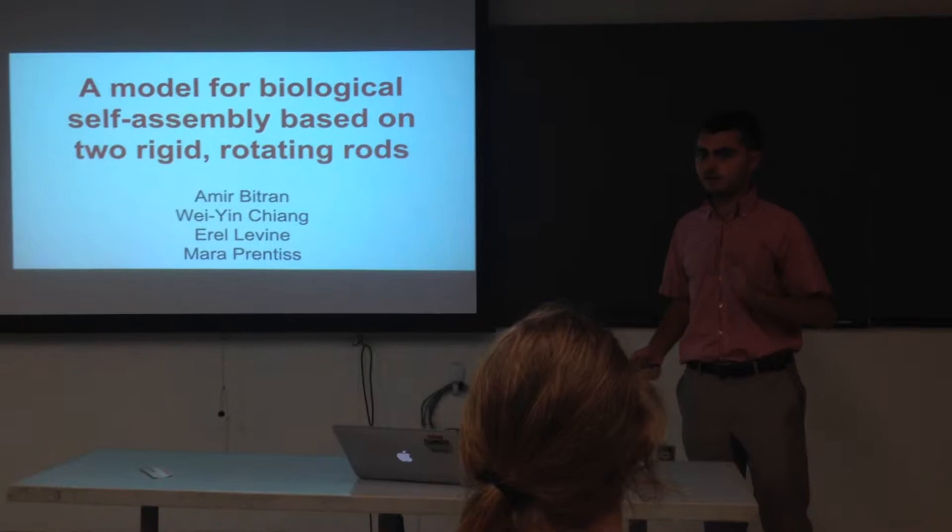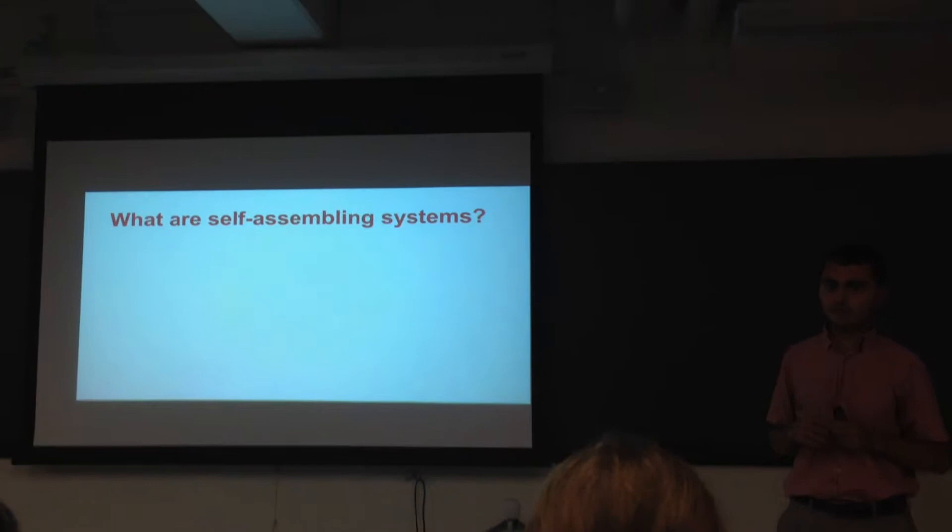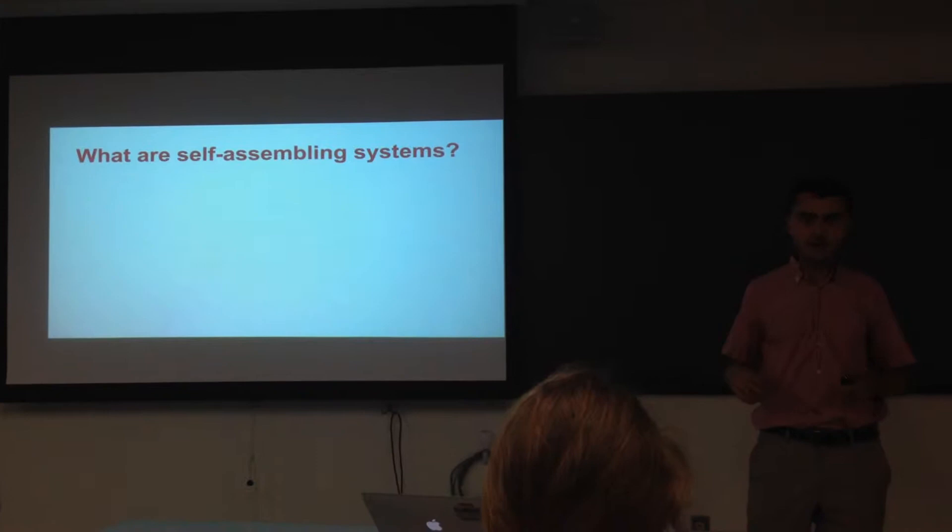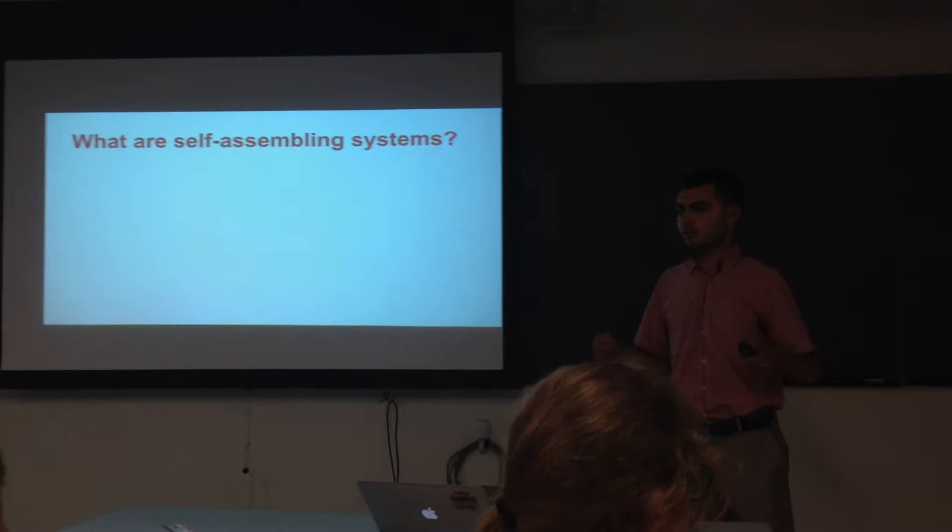So the first question is, what are self-assembling systems? As I mentioned, a self-assembly system is one that spontaneously adopts its 3D structure. So you can ask, how does a system know what is the correct 3D structure? And the answer always has to do with stabilization. The correct structure always has to have some chemical or physical properties that ensure that it is more stable than any other, right? So this might be some sort of electrostatic interaction, hydrogen bonds.